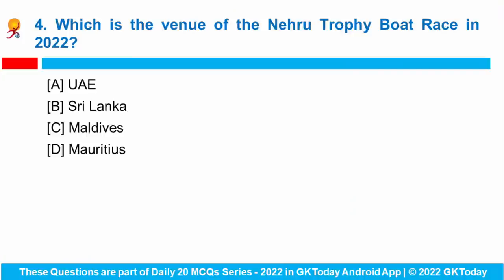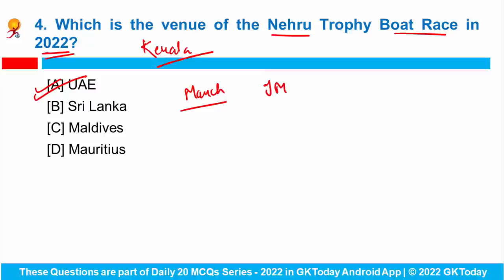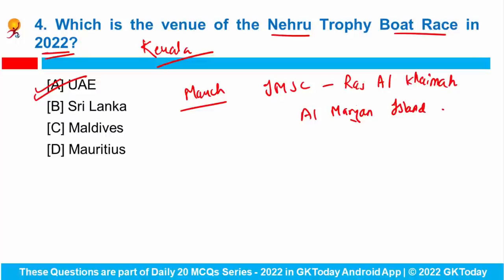Question number four: which is the venue of the Nehru Trophy Boat Race in 2022? The Nehru Trophy Boat Race, a famous event held in Kerala, is to be held in UAE this year. This race will be held in the month of March in partnership with the International Marine Sports Club Ras Al Khaimah at the Almarjan Islands in the UAE. The race was named after Jawaharlal Nehru's visit to the Kerala Boat Race in 1952.